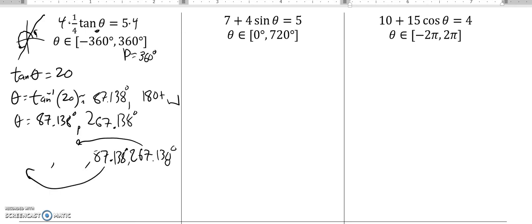So this one minus 360 gives me negative 92.862. And then this one minus 360 gives me negative 272.862 degrees. And I can check those by putting them into my calculator and plugging them back in and make sure that it makes this equal 5 or something close to 5.